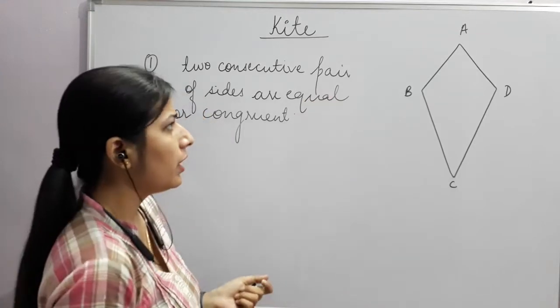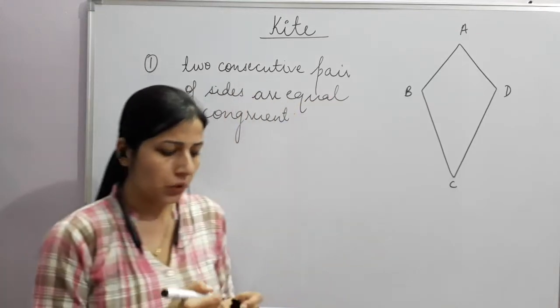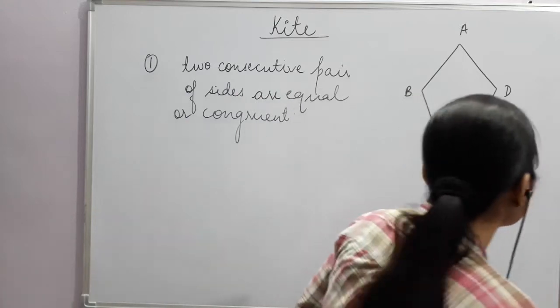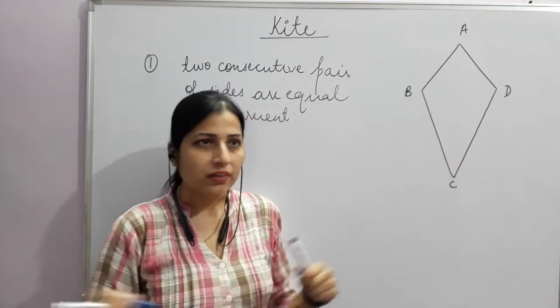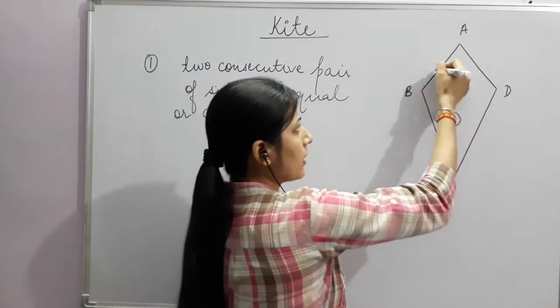Two consecutive pairs of sides can be written as equal or congruent — both mean the same thing. So the two pairs of consecutive sides are as follows.